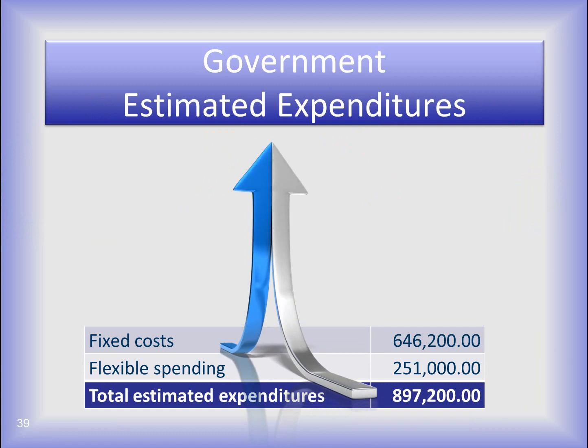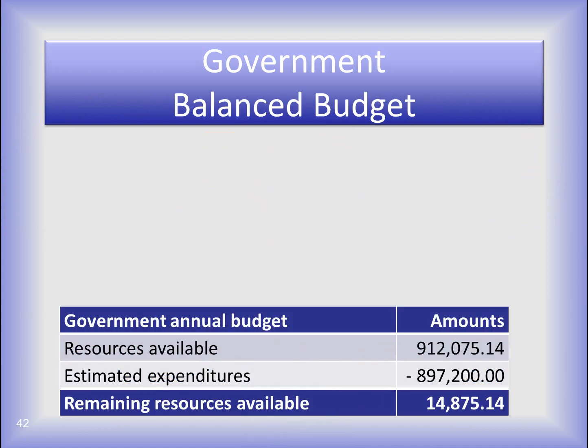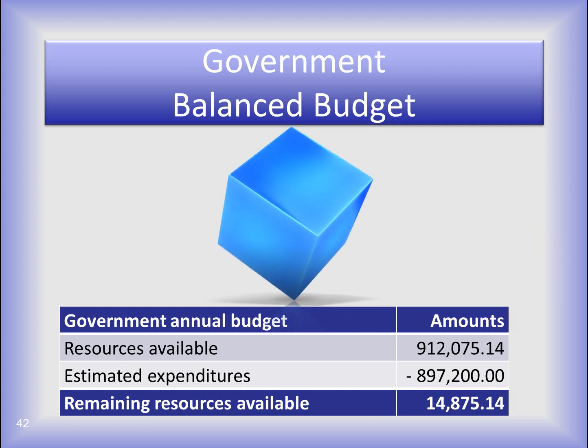The government had $912,075.14 of resources available and they adopted appropriations authorizing $897,200 for expenditures. Keep in mind this would be divided by funds — this is just an overall example. They have a balanced budget with $14,875.14 of resources still available. They're not planning to spend more than the resources available, therefore they have created a balanced budget. They can budget the remaining resources available or leave it to be budgeted at a later time if needed.